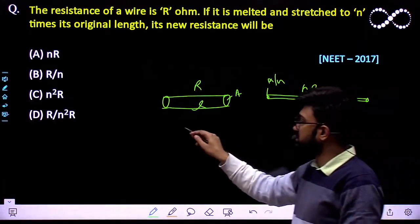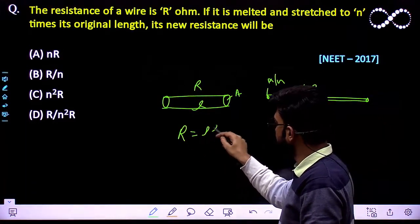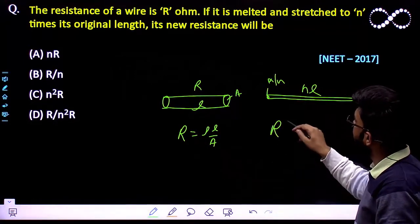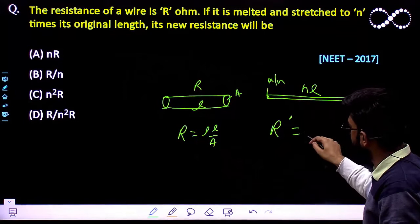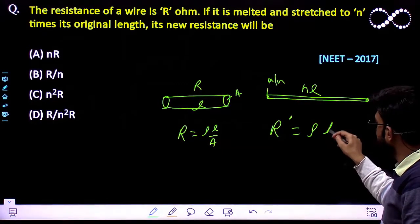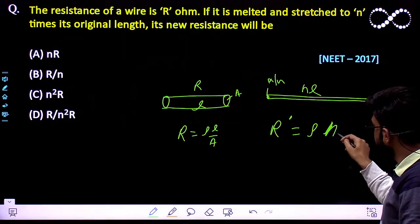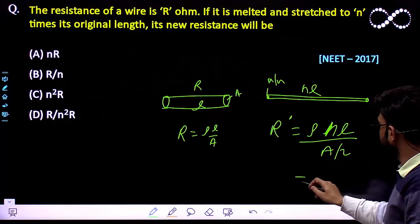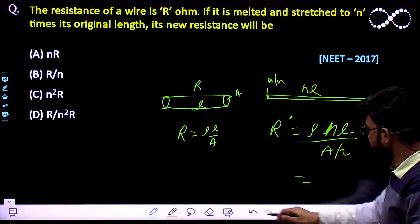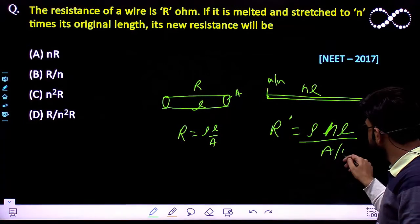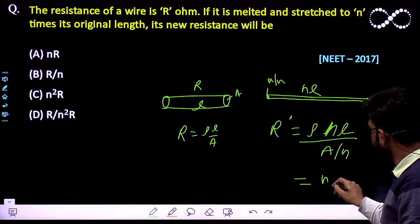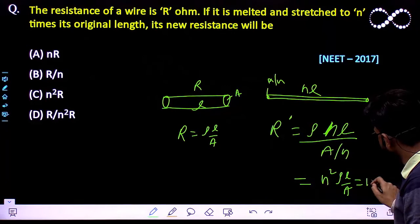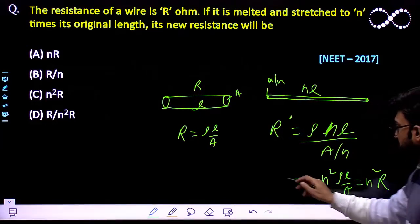This resistance is given by the relationship R equals rho L divided by A, where rho is the resistivity of the material. The new resistance R dash must be equal to rho times NL divided by the new area, which is A divided by N. So it would be N squared times rho L by A.